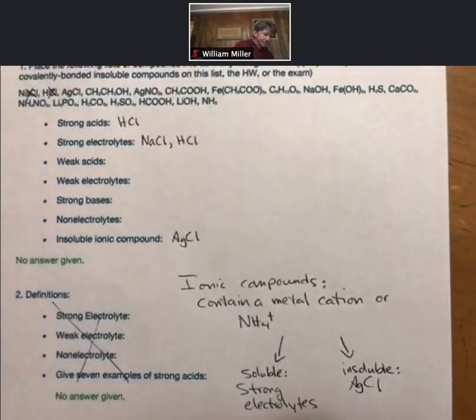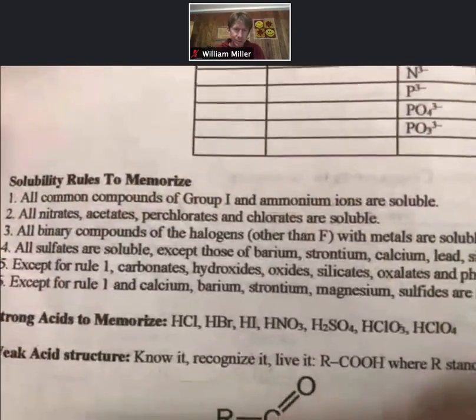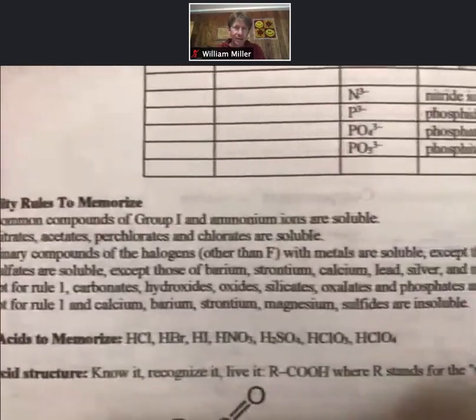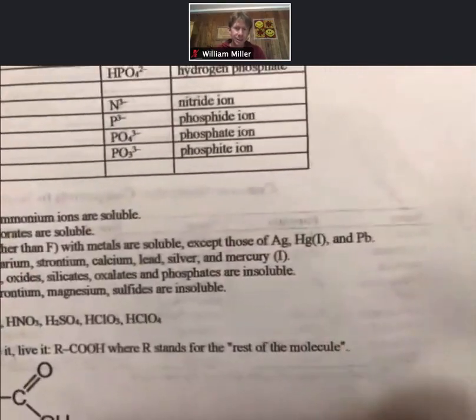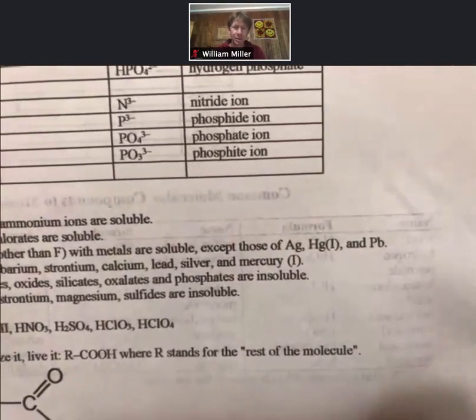Solubility rules: all binary compounds of the halogens other than fluoride with metals are soluble except those of silver, mercury one, and lead. So silver is definitely on that list.